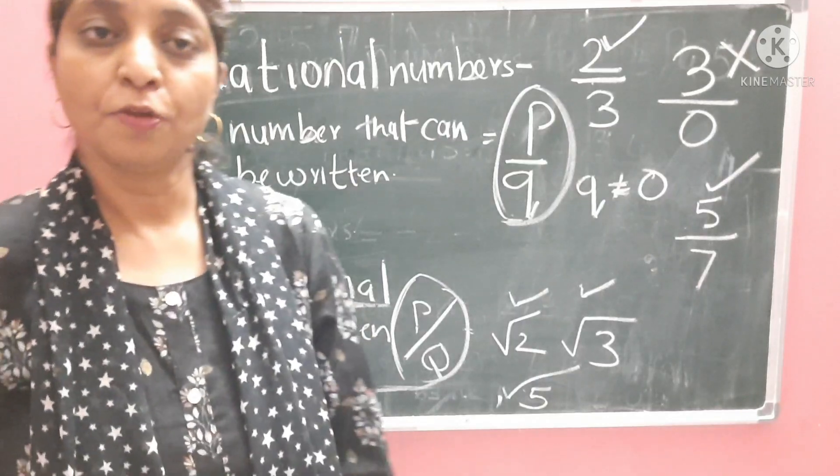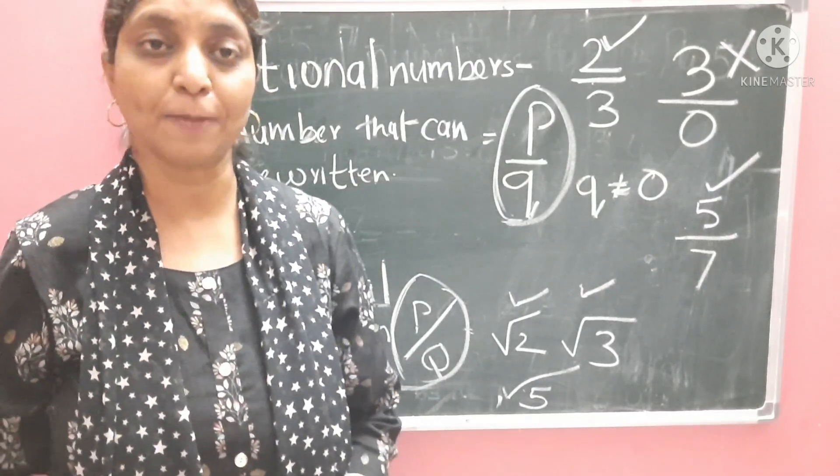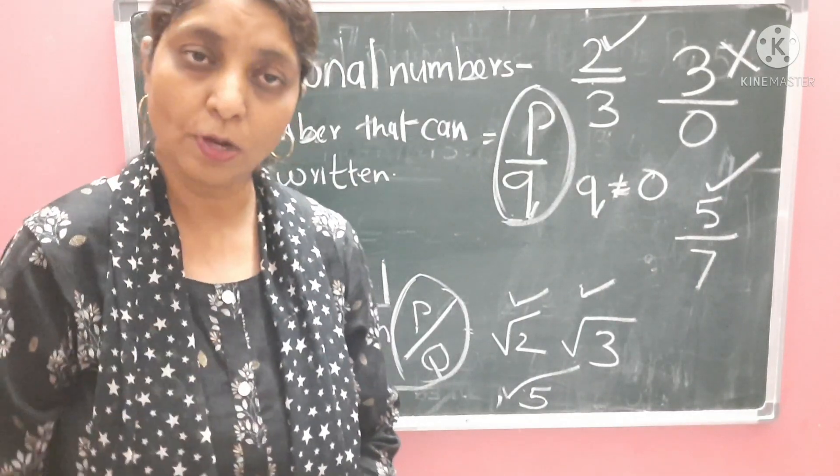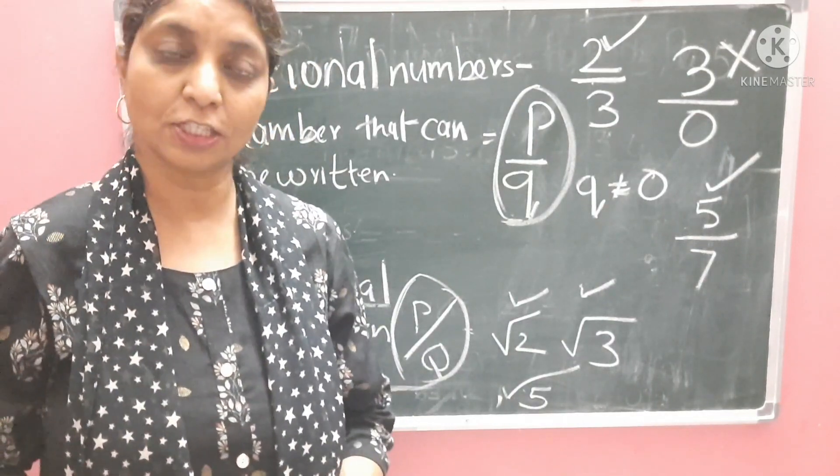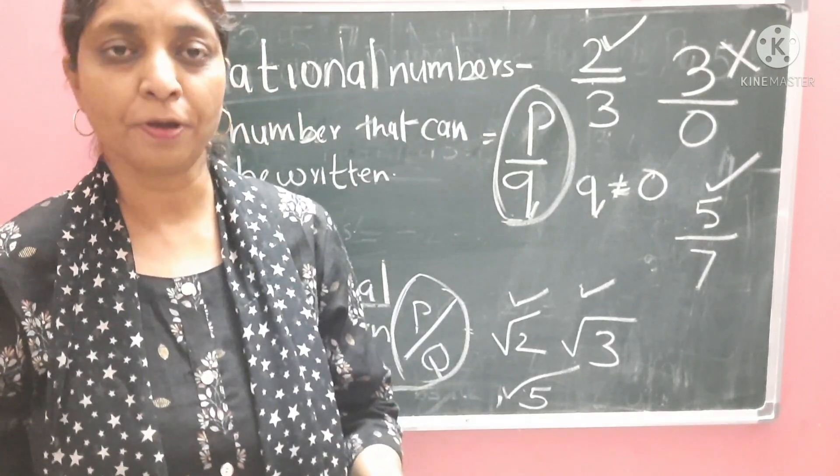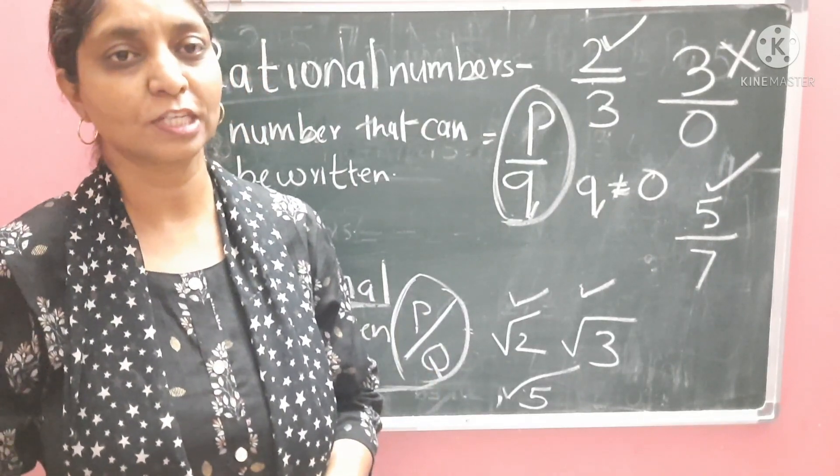So, with this, we have seen the different types of numbers: the whole numbers, the natural numbers, the prime, the composite, the integers. And I hope you have understood the concepts.